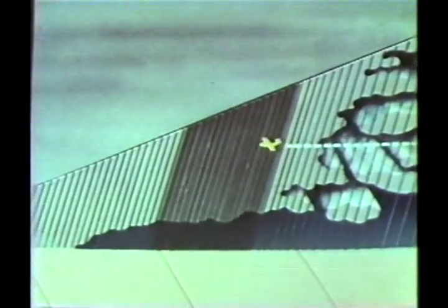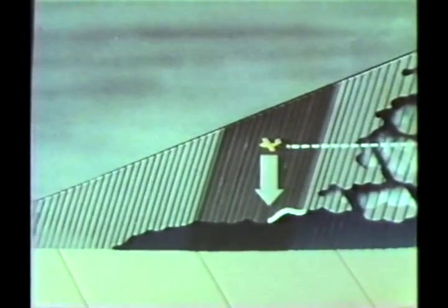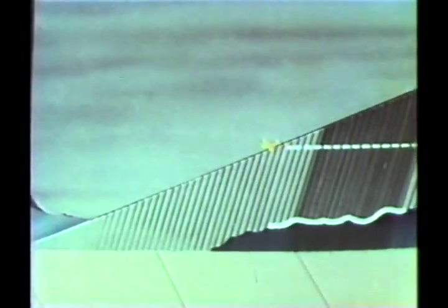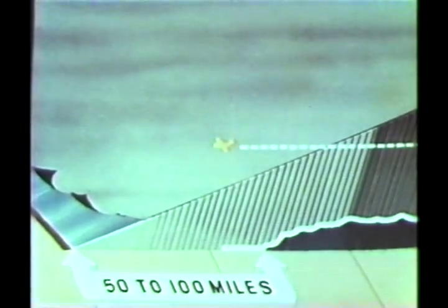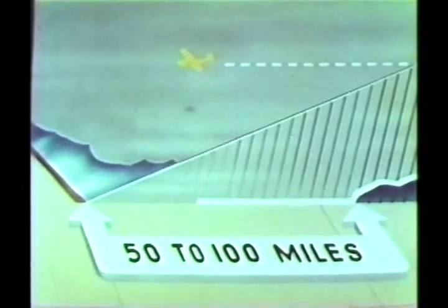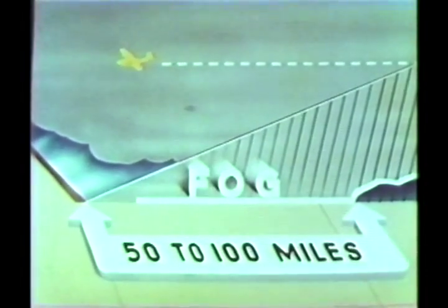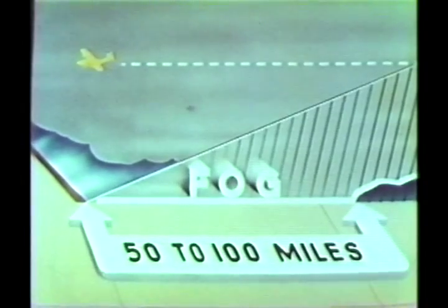As you continue your flight, surface conditions become worse. The ceiling will get progressively lower and surface visibility more limited. For a distance of 50 to 100 miles preceding the surface front, the ceiling and visibility will be near zero due to prefrontal fog. It is in this area that landings are often impossible due to zero-zero weather conditions.